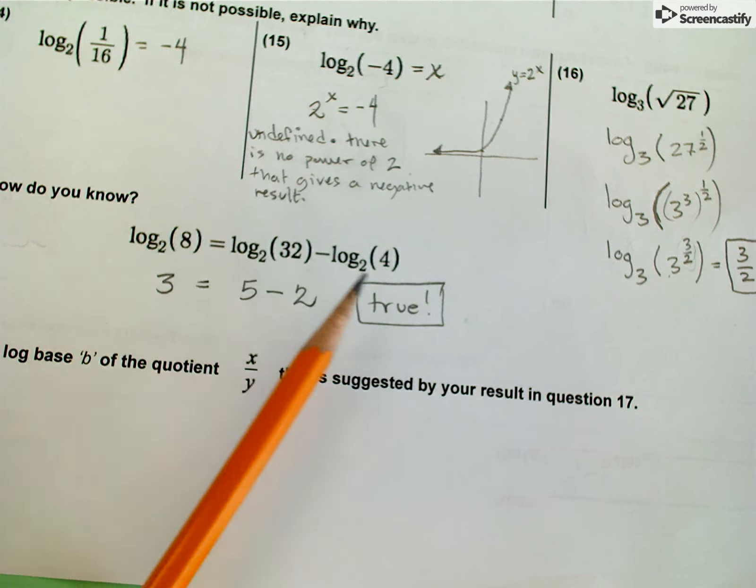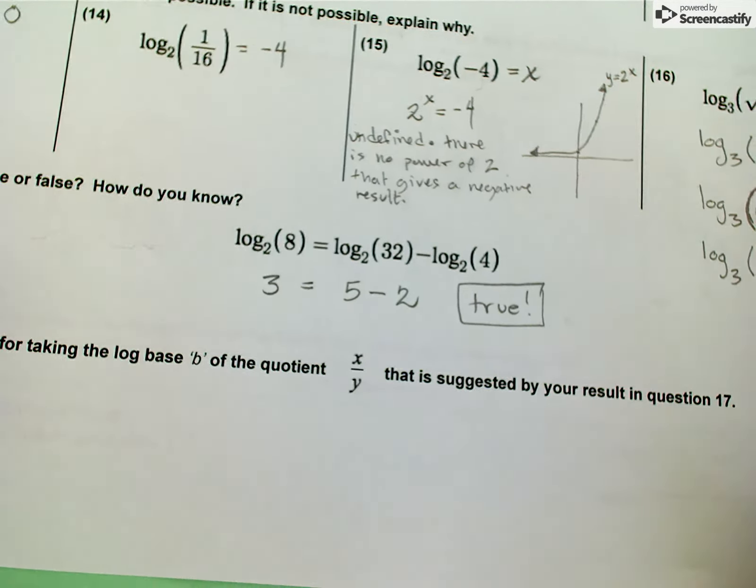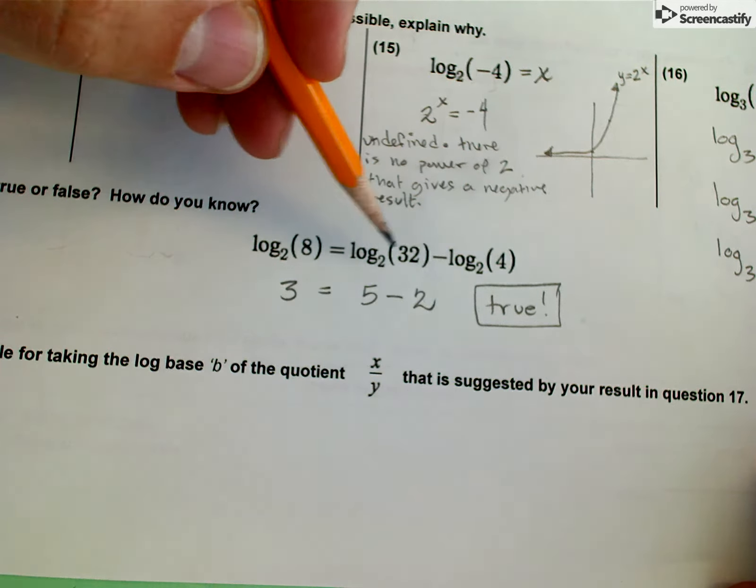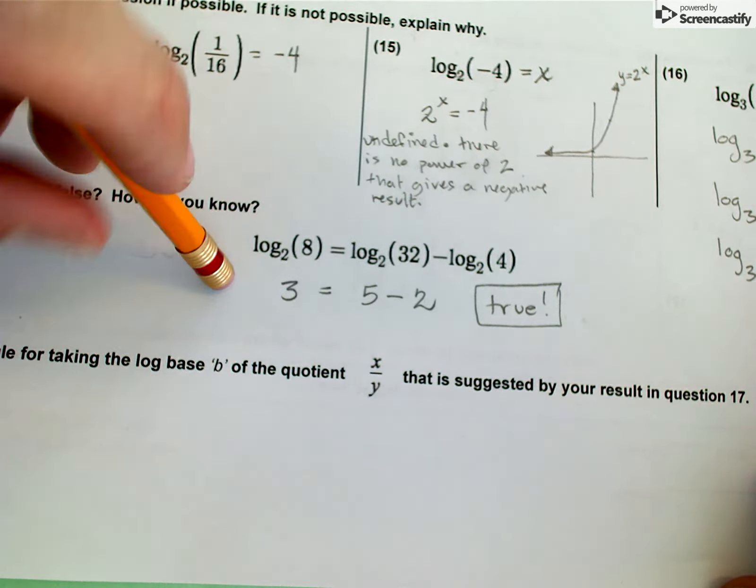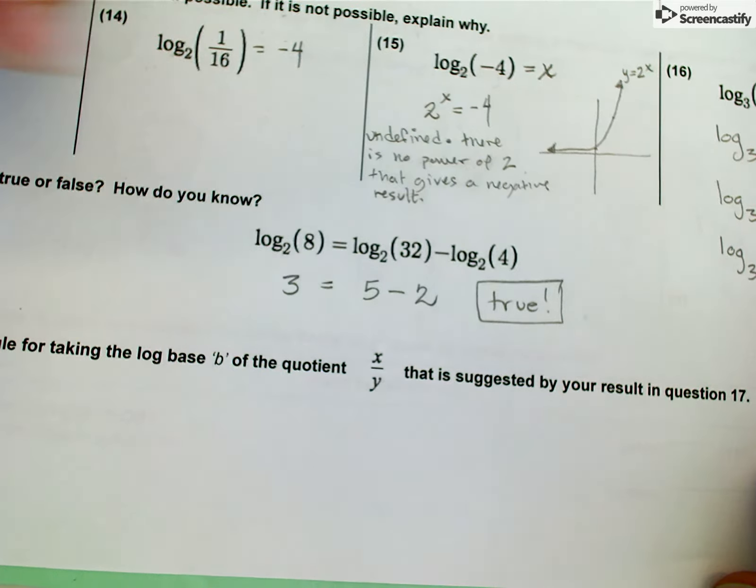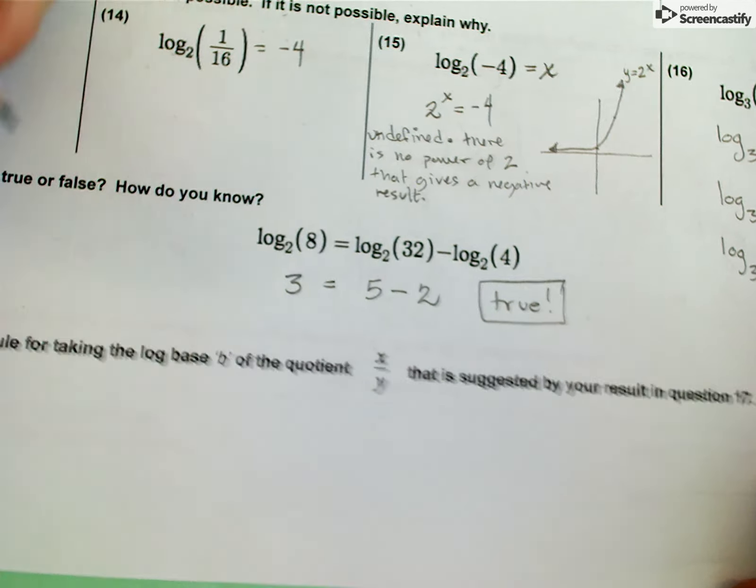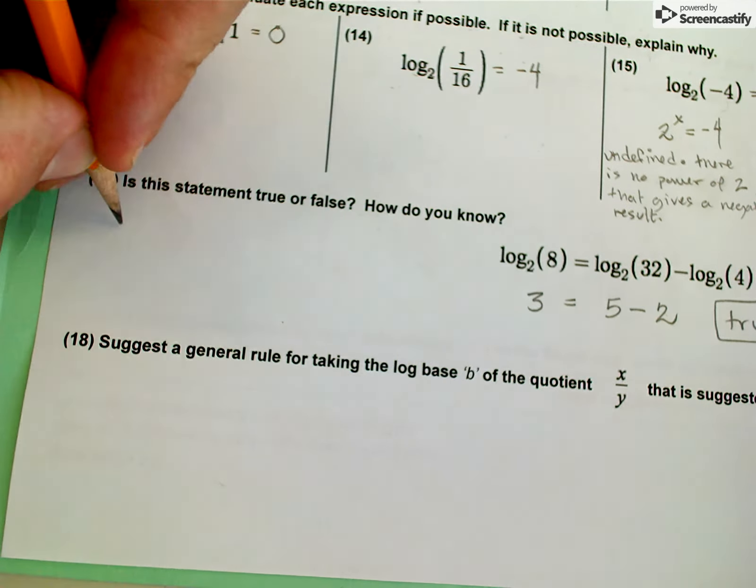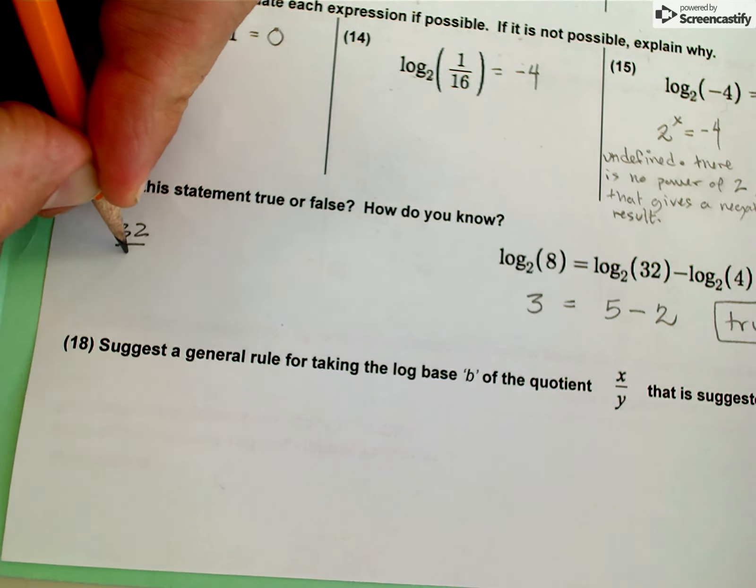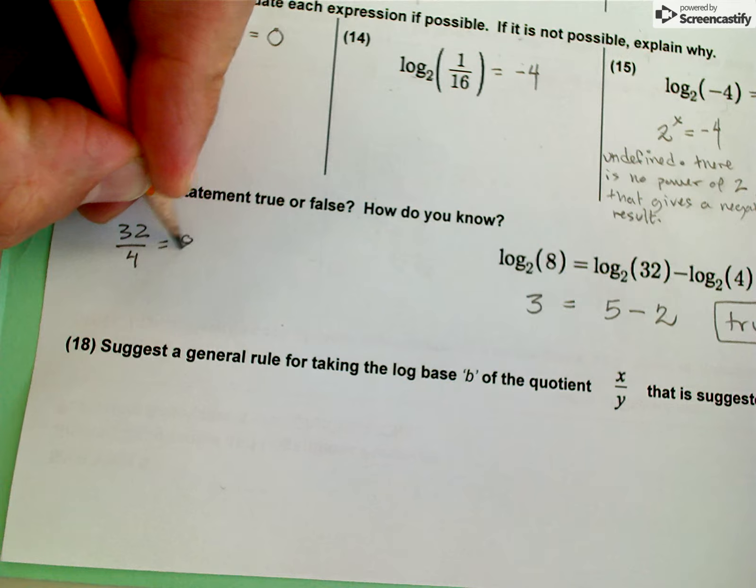If I want to rewrite this relationship in terms of exponents, I can take that idea that 32 divided by 4 is equal to 8 and write it in terms of the powers of 2. Let me just start over here and represent it this way: 32 divided by 4 equals 8.